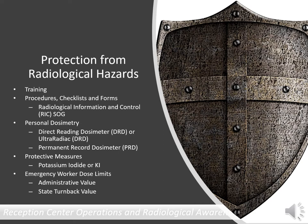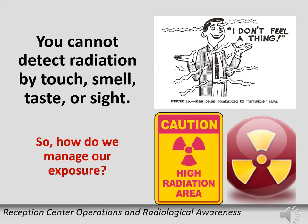Personal dosimetry is provided to allow you to track your exposure to radiation while responding to the event. Potassium iodide is available to protect your thyroid gland. Emergency worker dose limits are established to ensure you do not exceed the recommended limits of exposure. Since you can't see, touch, taste, or smell radiation, how do we manage your exposure?